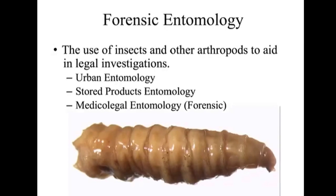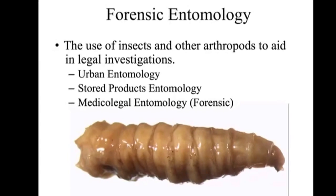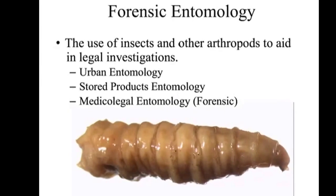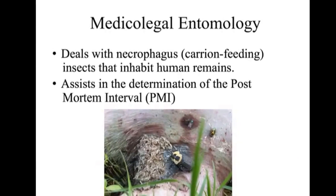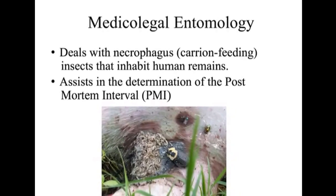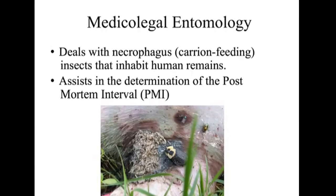The medical legal branch is our forensic study. Medical legal entomology deals with necrophagous, or carrion-feeding, insects. Necro means death, and phagus comes from the root word meaning to eat — so it is literally the eating of dead tissue and flesh.